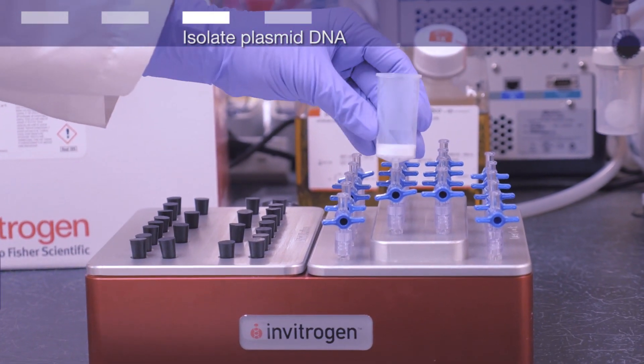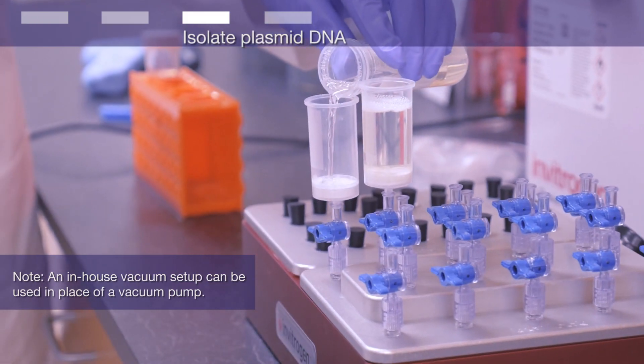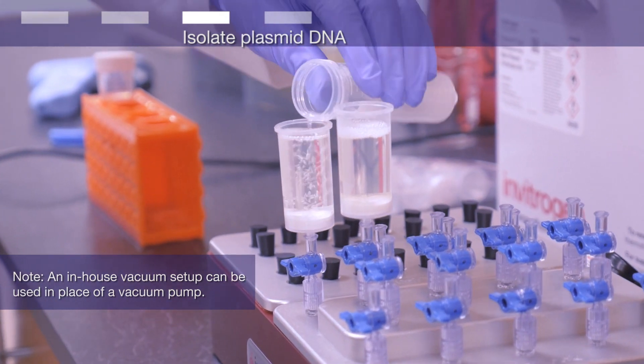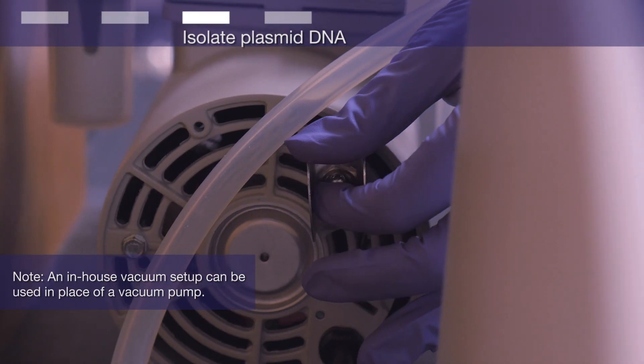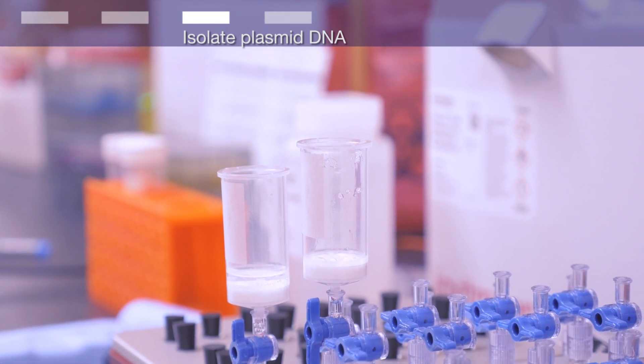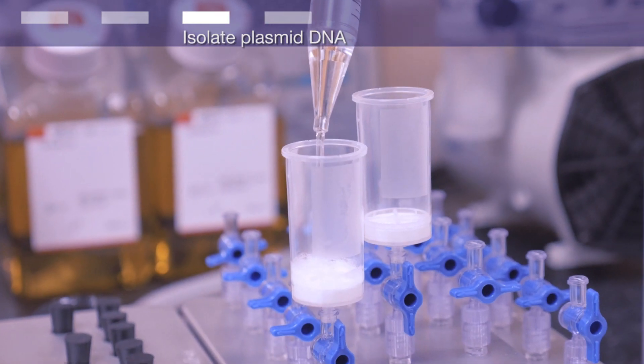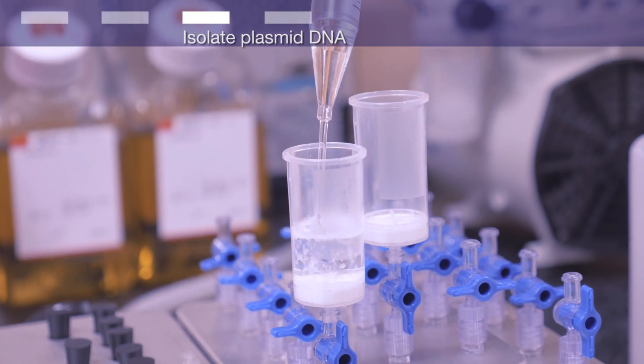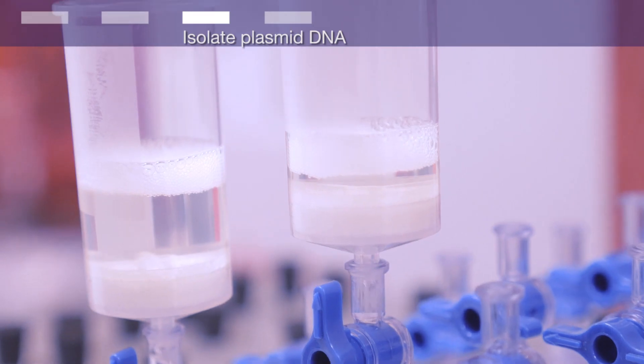Attach the DNA binding column to a vacuum manifold and load the clarified lysate onto the column. Apply vacuum to drain the solution. Your plasmid DNA is now bound to the column. Add 1 column volume of wash buffer and apply a vacuum to drain the solution.